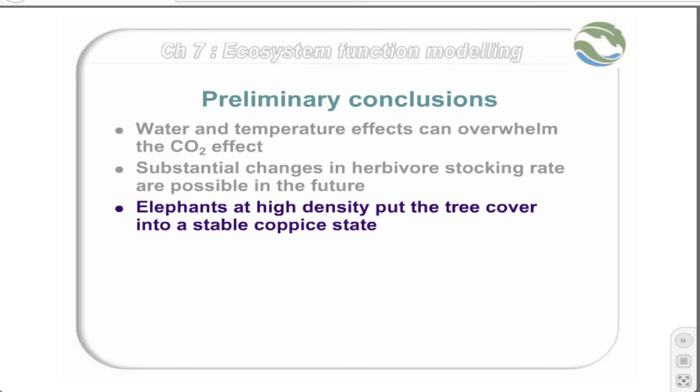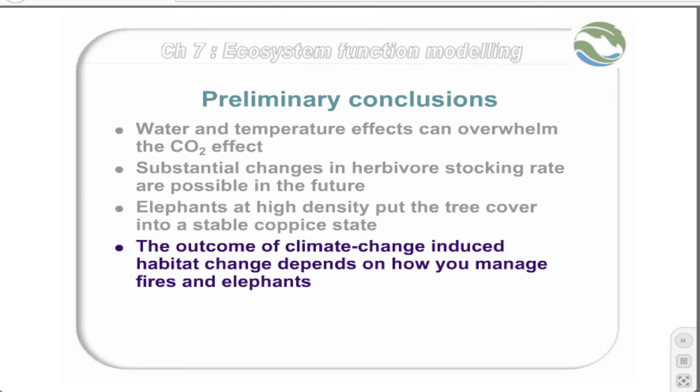Elephants are a major factor in the vegetation, and when at a high density, transform the landscape into a stable coppiced state to the detriment of some other herbivores. Thus, the outcome of climate change induced habitat transformation is to a large extent dependent primarily on management policies and impacts in the arena of fires and elephants. This means that managers should therefore concentrate efforts on these two areas, minimizing the required inputs.